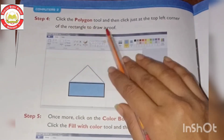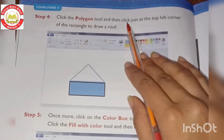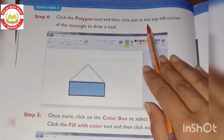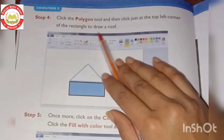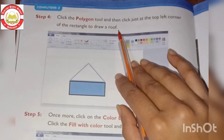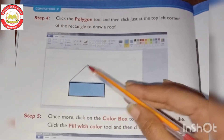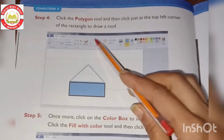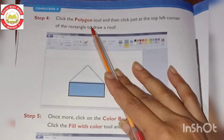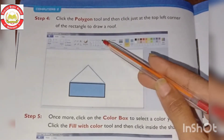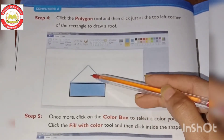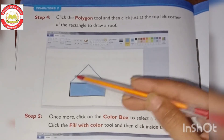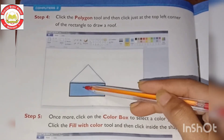Step 4: Click the polygon tool and then click just at the top-left corner of the rectangle to draw a roof. Use the polygon shape tool to create the roof shape of the house.